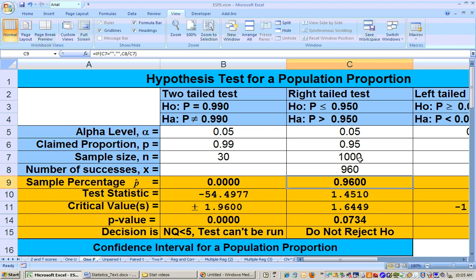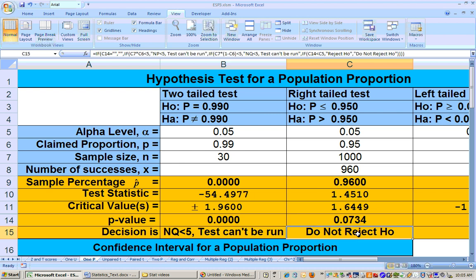We're doing a right-tailed test because it said more than 95% of people or a family member own a cell phone. So that's alpha level 0.05. Here's the claim percentage of 95%, here's your sample size of 1,000, and here's how many successes we had, 960. It automatically calculates your sample percentage. You get 96%. Is this significantly greater than 95%? Well, 96% is awfully close to 95% to be said it's significantly greater than 95%. In fact, it's not significantly greater than 95%.